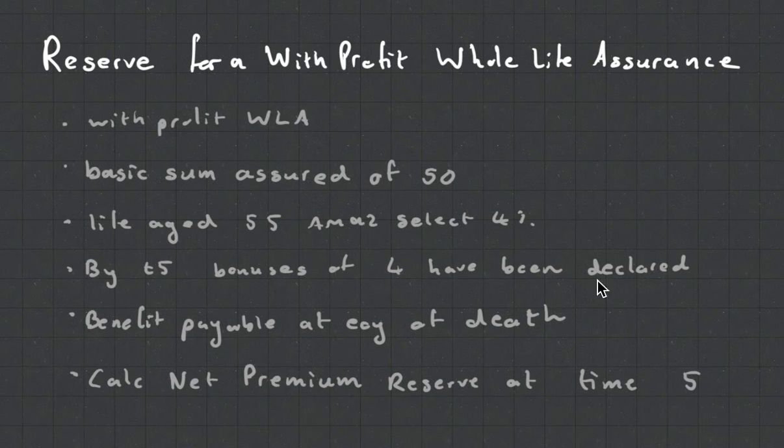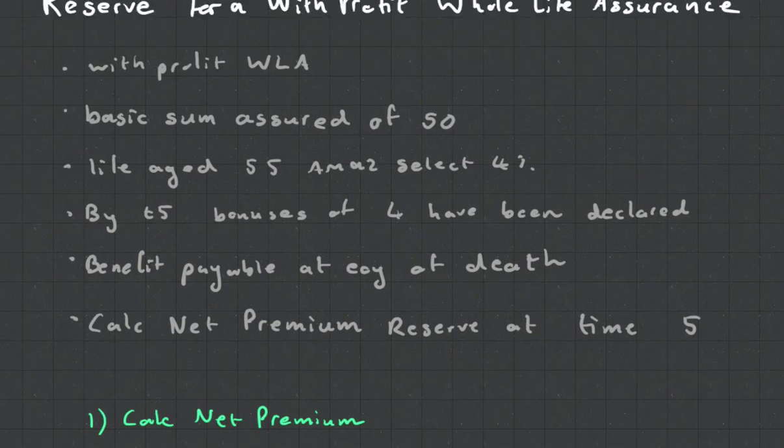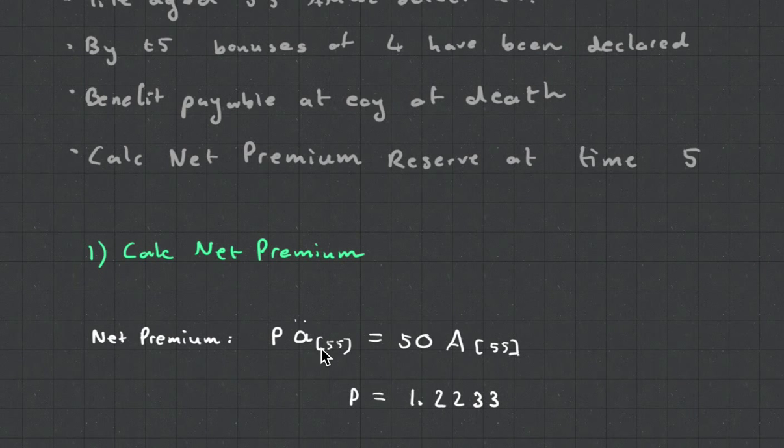By 65 bonuses of 4 have been declared. Benefits payable at the end of death. Calculate the net premium reserve at time 5. So net premium reserve, we don't have to worry about any future bonuses. They've given us a past bonus. But what we do when we calculate our net premium, you can see the bonus is ignored.